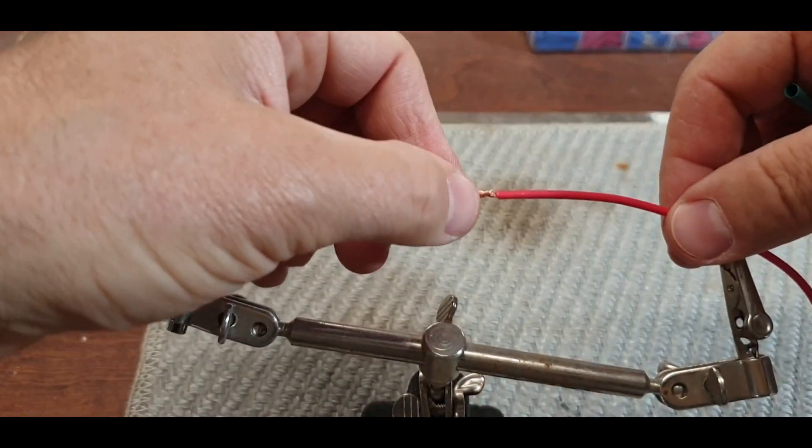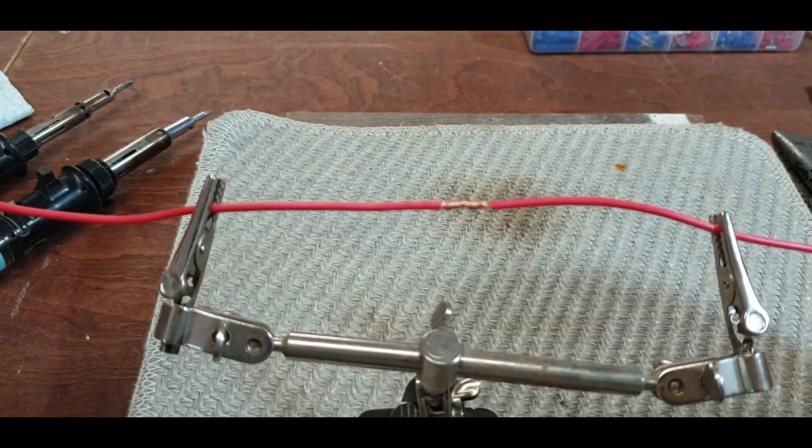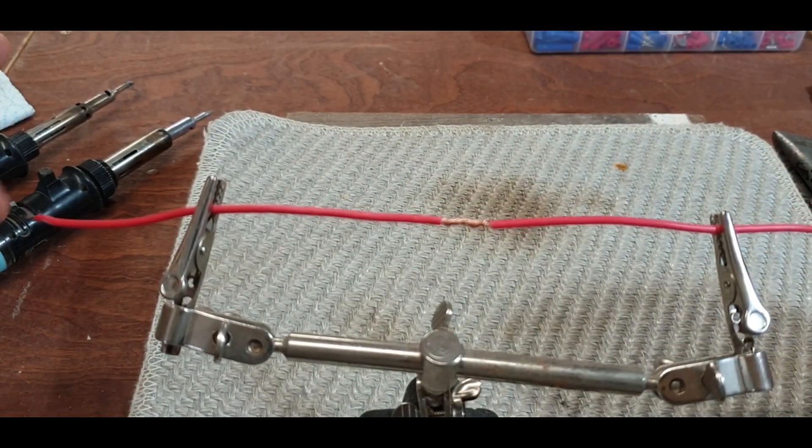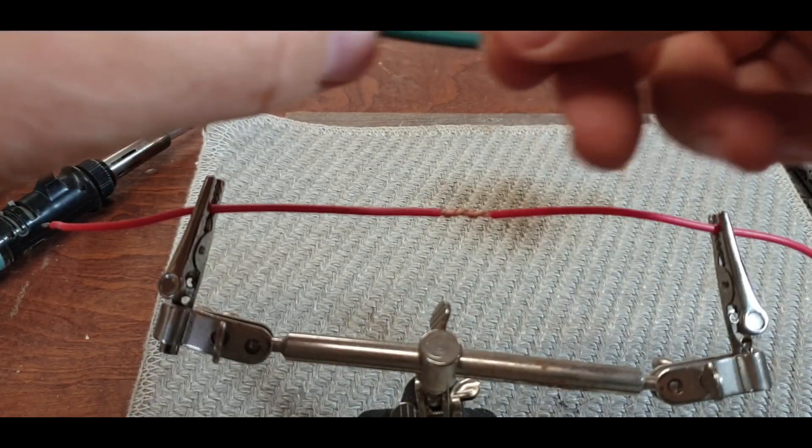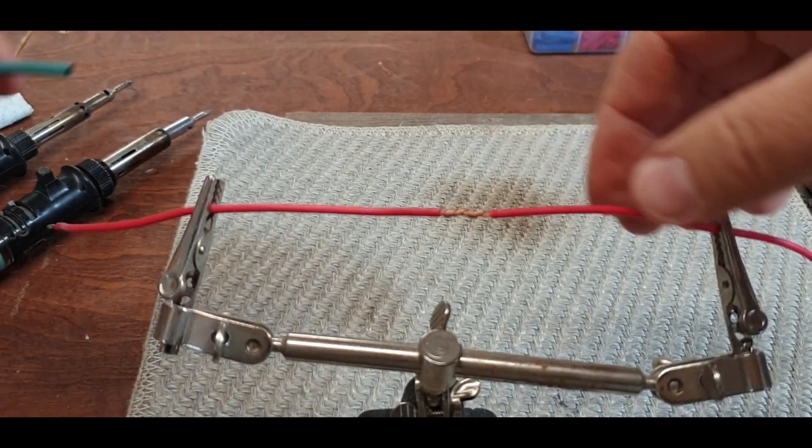Now if you're using heat shrink in a real-world situation, if this is on a car, for instance, and these ends are made off and connected somewhere and you can't separate them, put your heat shrink on first. Because you see the problem? Now we can't get it on there.